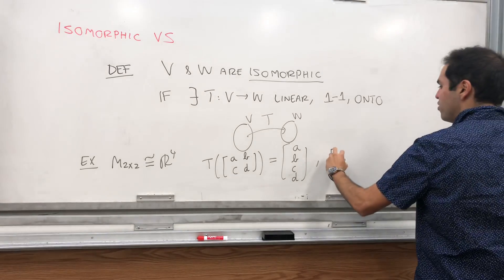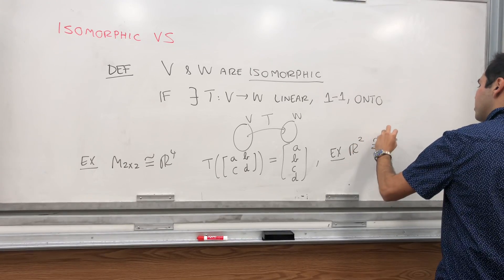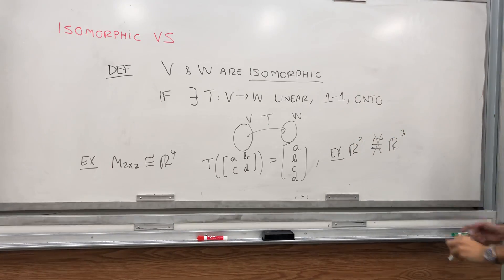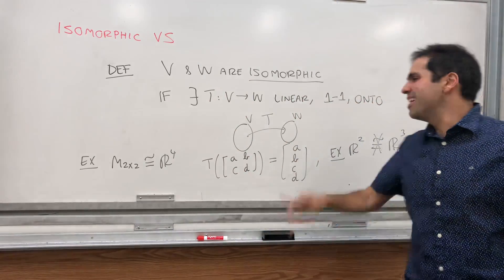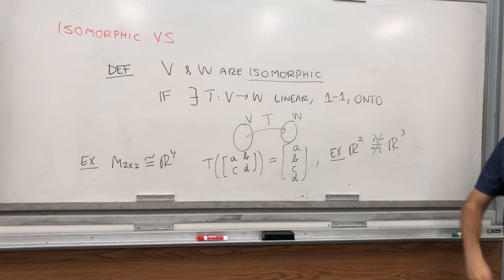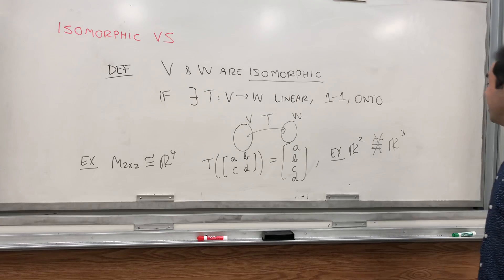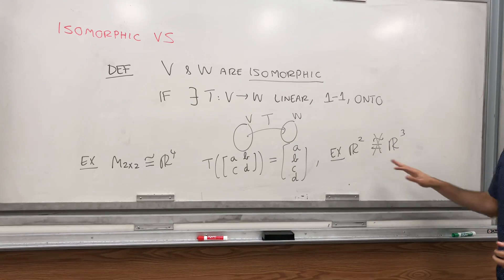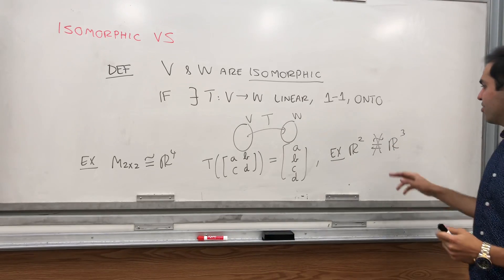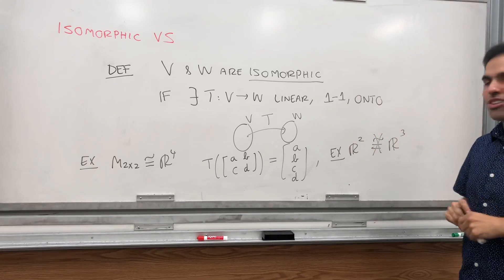But for example, if you take R2, it's not isomorphic to R3. Because basically a plane can never have the same shape as the whole R3 space. Otherwise, we would actually just live in two dimensions, basically. But the mathematical reason is, turns out there's no onto linear transformation from R2 to R3. So you cannot fill R3 with just R2 using just linear transformations.